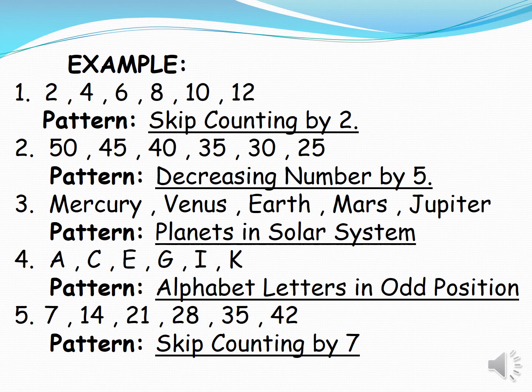Number 3. Mercury, Venus, Earth, Mars, Jupiter. Pattern planets in solar system.